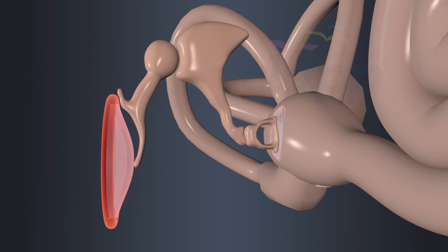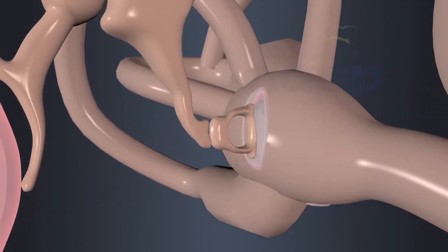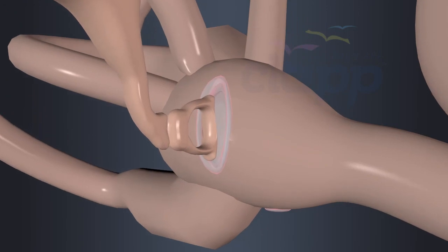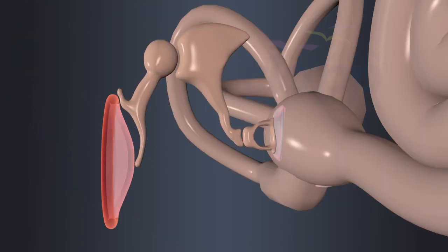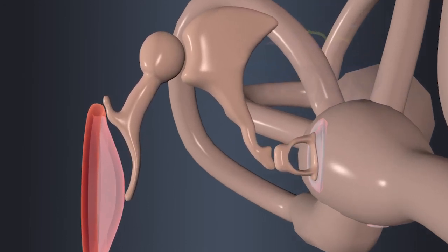The ossicles amplify and relay the vibrations from the eardrum to the oval window. While transmitting, bones in the ossicles amplify these sound vibrations. Normally, it amplifies up to 20 times higher than what they receive in the malleus.